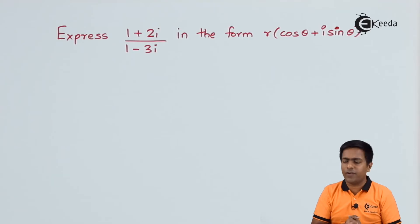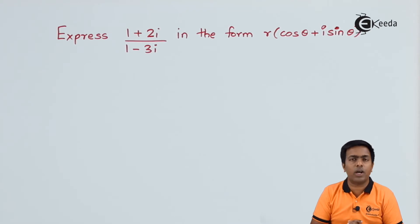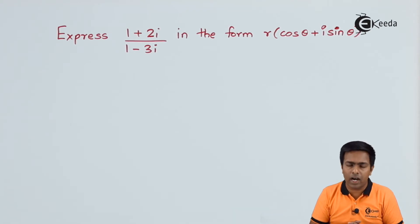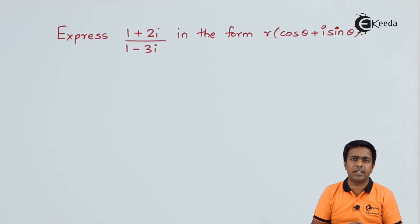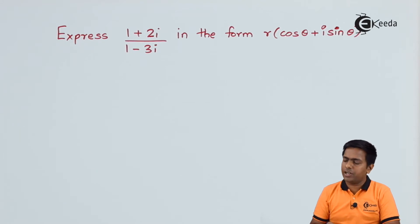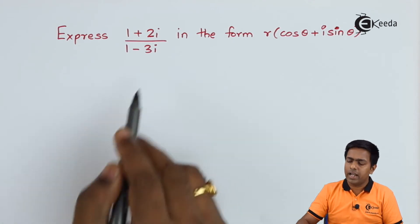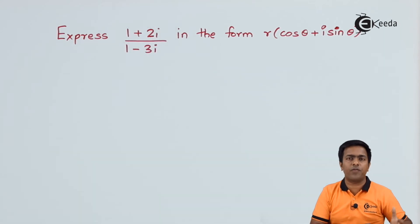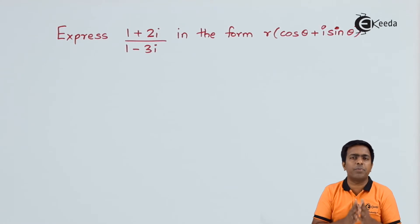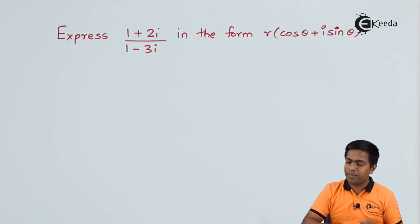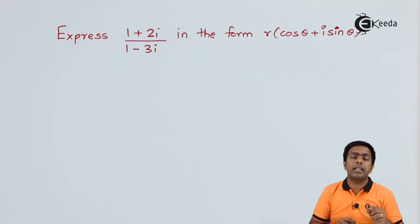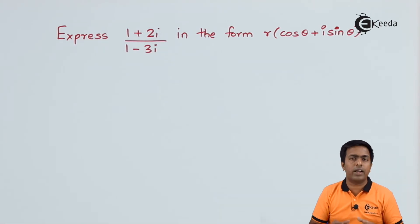We have to express (1 + 2i) / (1 - 3i) in the form r(cos θ + i sin θ), which is the polar form of a complex number. Whenever we want to convert any complex number from Cartesian form to polar form, we need to first bring it into standard form. This number is in Cartesian form but not yet in standard form.